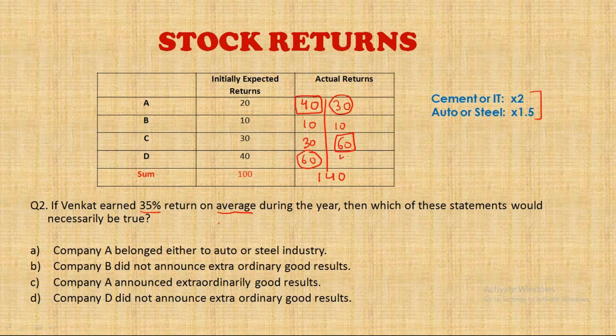In both scenarios, the remaining companies are unchanged and we get exactly 140. You will find there is no other way to double one and multiply another by 1.5 and still get exactly 140 total return. Importantly, company A is definitely one of the companies which gave extraordinarily good returns — either 100 percent extra or 50 percent extra.